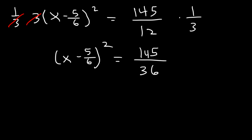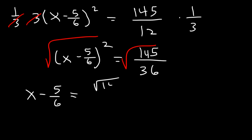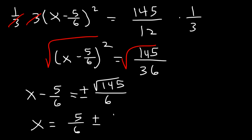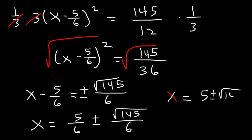Now let's take the square root of both sides. We can't really simplify the square root of 145, so we'll just have to leave it the way it is. But the square root of 36 is 6, and this is going to be plus or minus. All we can do is now add this fraction to this side. So the final answer: x is equal to 5 over 6 plus or minus root 145, divided by 6. If you want, you can write it as a single fraction since we have the same denominator: 5 plus or minus root 145, over 6.